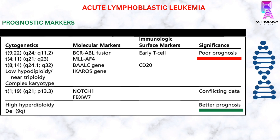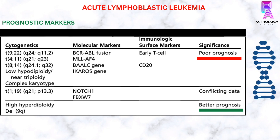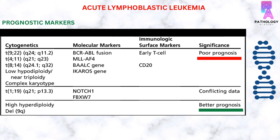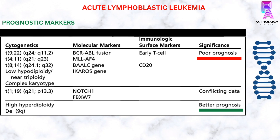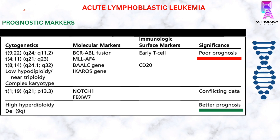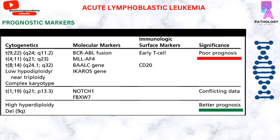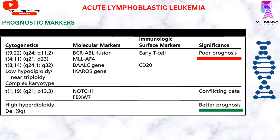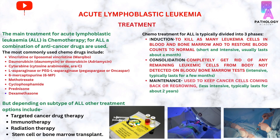Coming to the prognostic markers: certain markers are associated with good prognosis and certain cytogenetic markers with bad prognosis. For example, translocation t(9;22), translocation t(4;11), and translocation t(8;14) are associated with poor prognosis. However, deletion 9q and hyperdiploidy are associated with better prognosis.